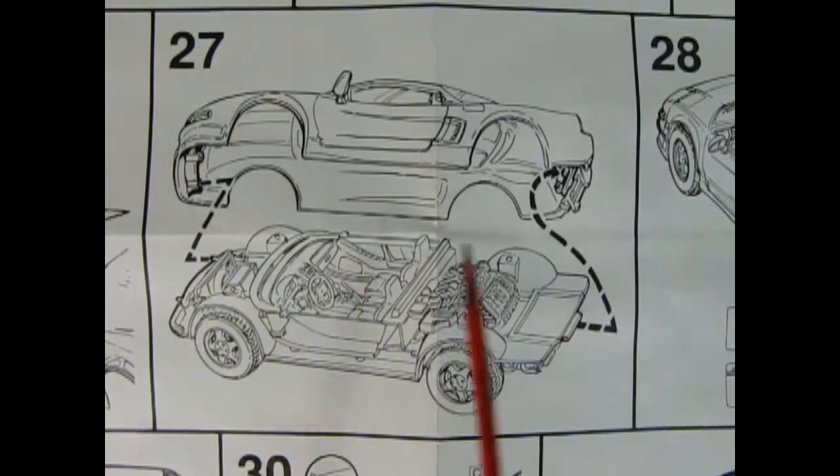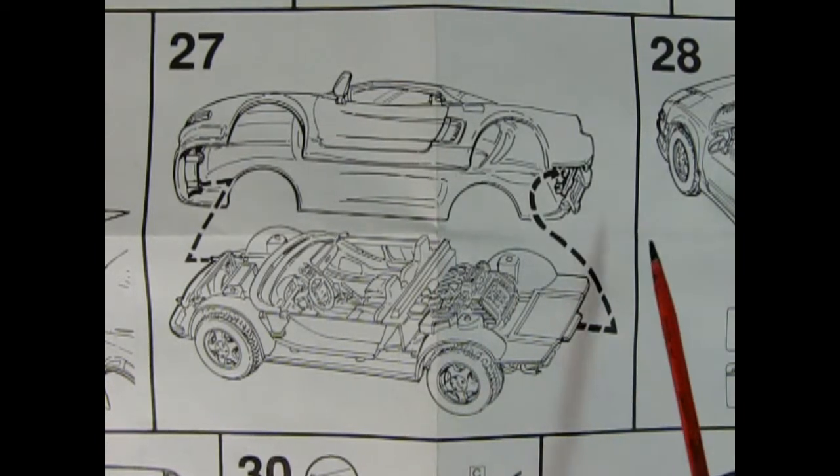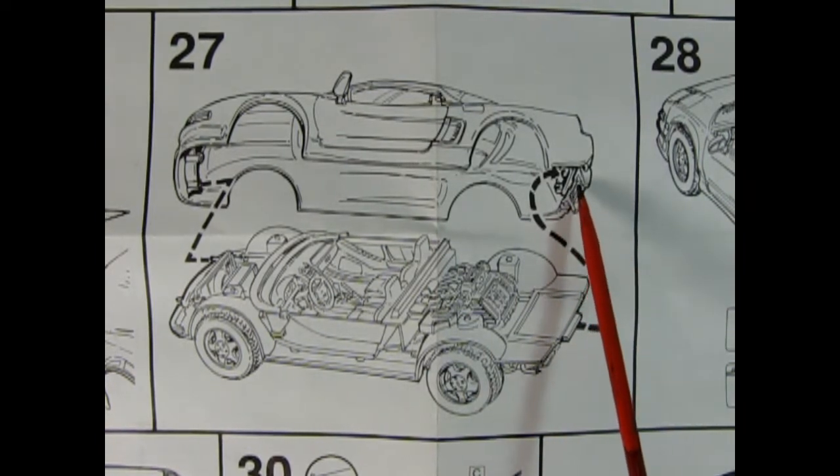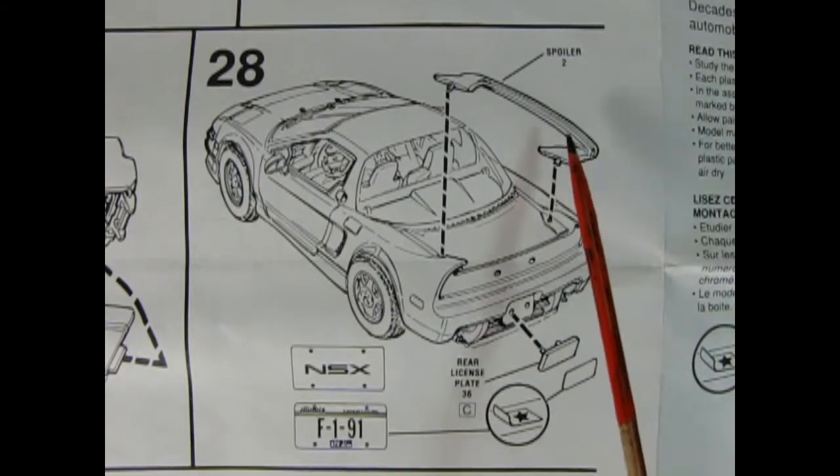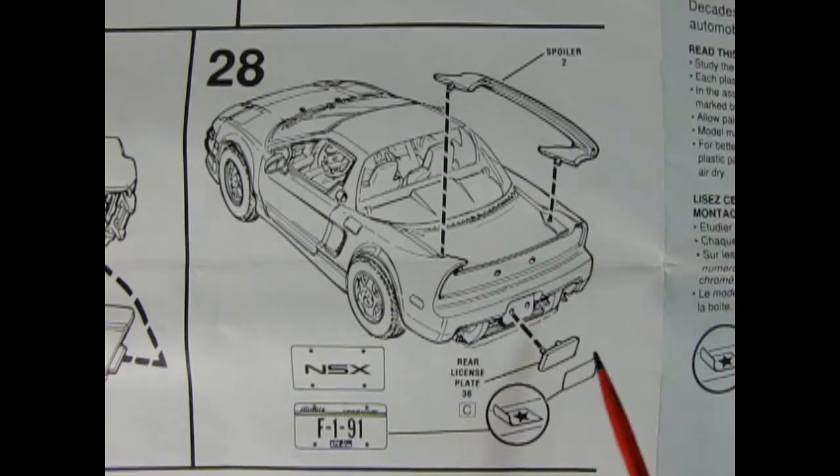Panel 27 shows the body being hooked into place. There's a tab on the back which hooks up into a slot in the body and same for the front. In panel 28, we see our spoiler being put on the car and our license plates with the license plate decals.